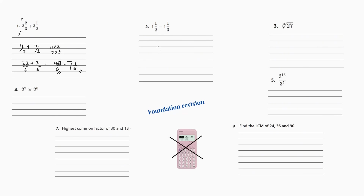Number two is a subtraction. Once again, we have to get the denominators the same. So: one times two is two, plus the one is three — that's three over two. Subtract: one times three is three, plus the one is four — four over three. Now we times diagonally: three times three gives nine, and four times two gives eight. Both denominators are two times three, which is six. So nine over six minus eight over six — nine minus eight is one, giving one over six.